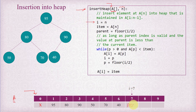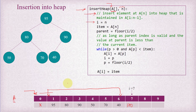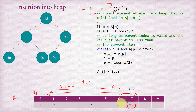The algorithm says: insert element at a[n] into the heap maintained in a[1] to a[n-1]. The heap is currently maintained from index 1 up to index 6 — that's 1 to n-1, where n is 7. We need to insert the element at index 7 so the heap is maintained from 1 to n (i.e., 1 to 7). The algorithm performs comparison operations with parents, just as shown in the animation. Let's do the dry run — i is n, so i is 7, and the item to insert is a[n], which is 100.